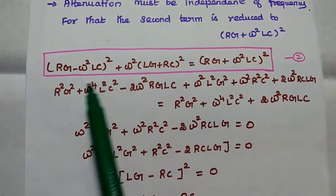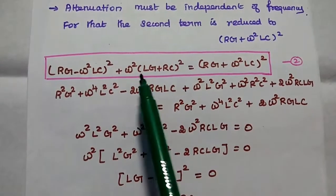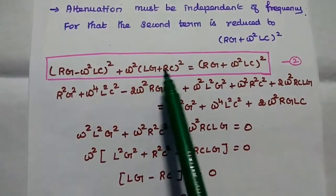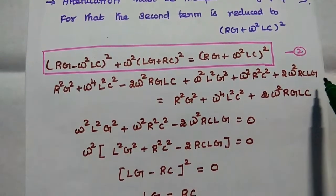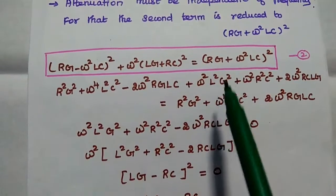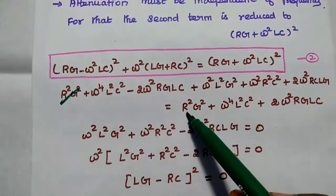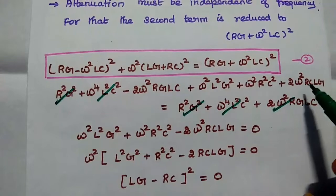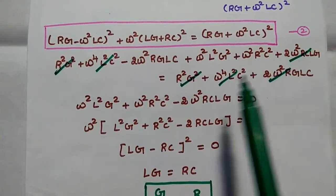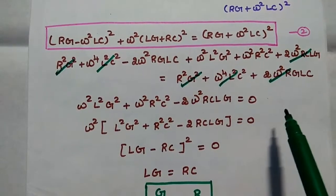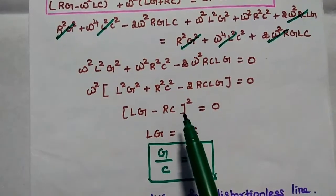Next we expand all the squared terms. The first term (a minus b) whole square gives r squared g squared plus omega squared l squared c squared minus 2 omega squared rg lc. The next term, with omega squared as common and expanding (a plus b) whole square, gives omega squared l squared g squared plus omega squared r squared c squared plus 2 omega squared rc lg. The right-hand side becomes r squared g squared plus omega squared l squared c squared plus 2 omega squared rg lc. Simplifying and cancelling similar terms on both sides, we get omega squared l squared g squared plus omega squared r squared c squared minus 2 omega squared rc lg equals zero. Taking omega squared as common, this becomes lg minus rc, whole square.